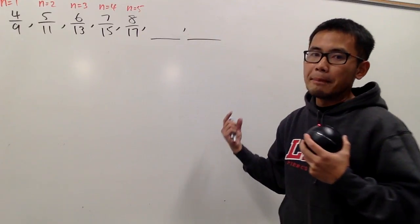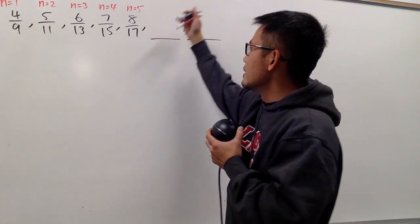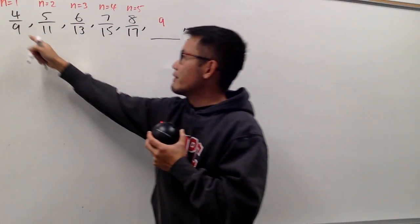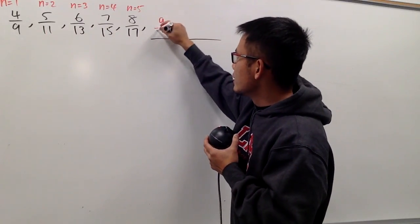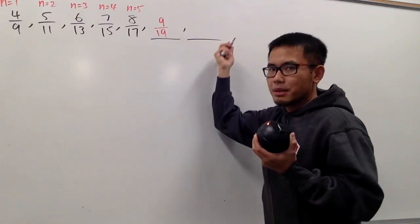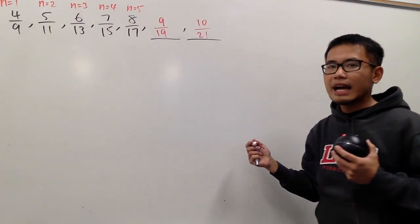Well, to fill in the blank, it's not bad at all. As you can see, we have 4, 5, 6, 7, 8, of course this one should be 9. And then on the bottom we have 9, 11, 13, 15, 17, and this right here should be 19. Similar pattern, right? So you just add 1 on the top and then add 2 on the bottom, like this, and like that.